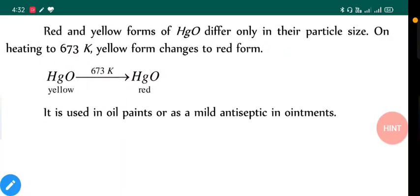Red and yellow forms of HgO differ only in their particle sizes. On heating at 673K, yellow form changes to red form. So particle size decides color of the compound, although both of them are the same, just the size of their particles - that means bunch of mercury oxide molecules will decide the color of compound.